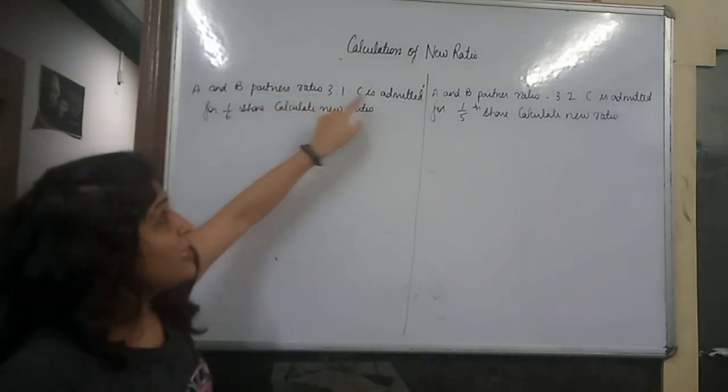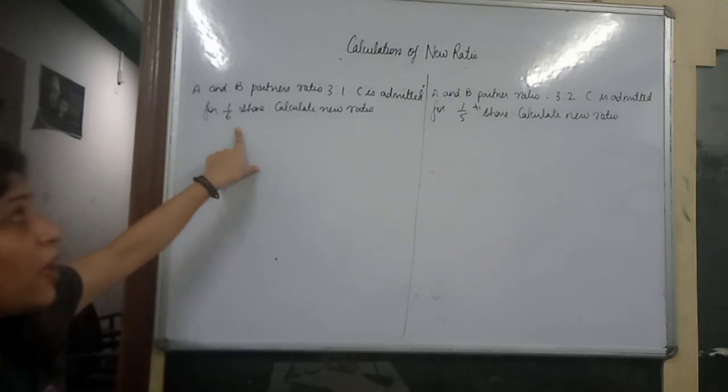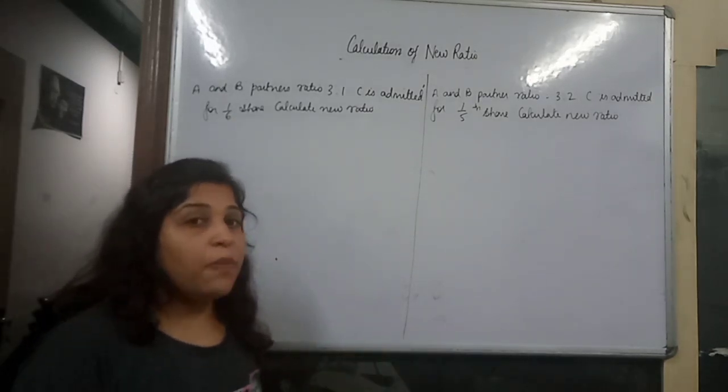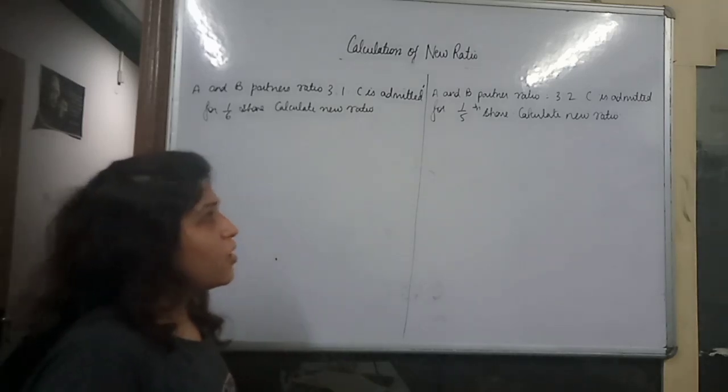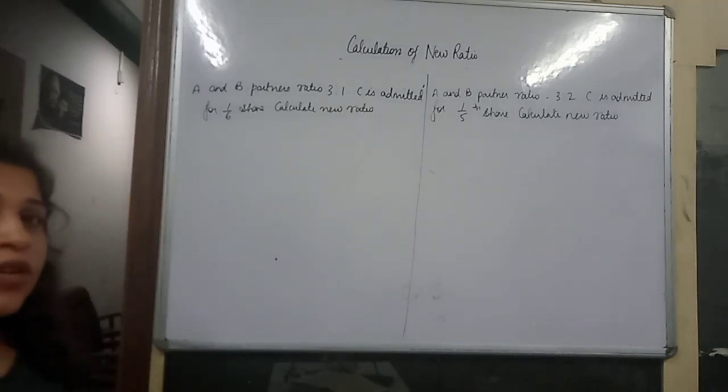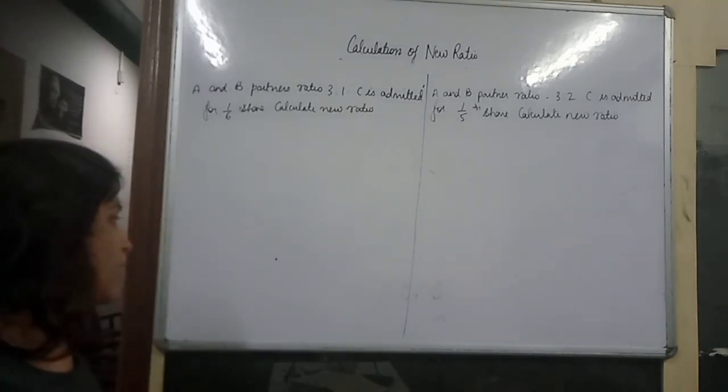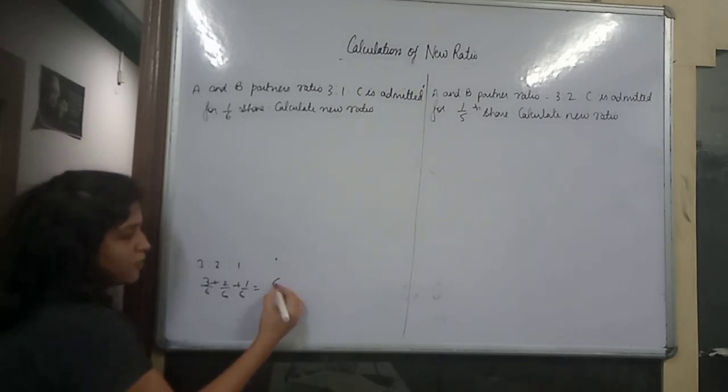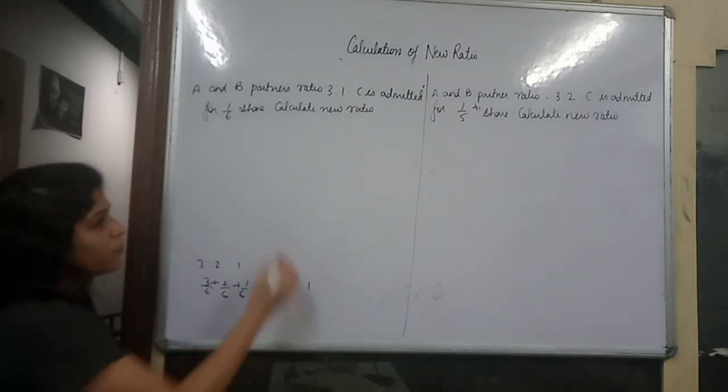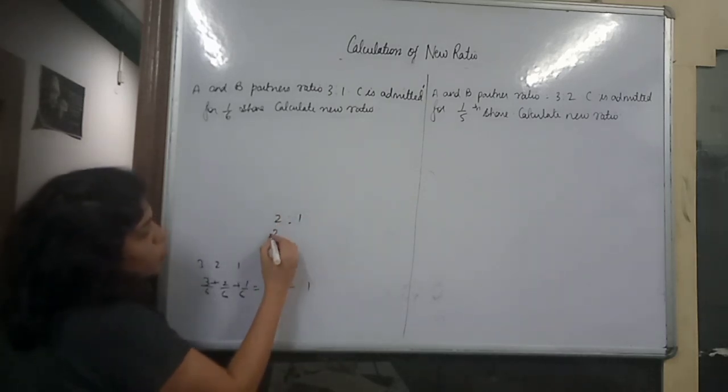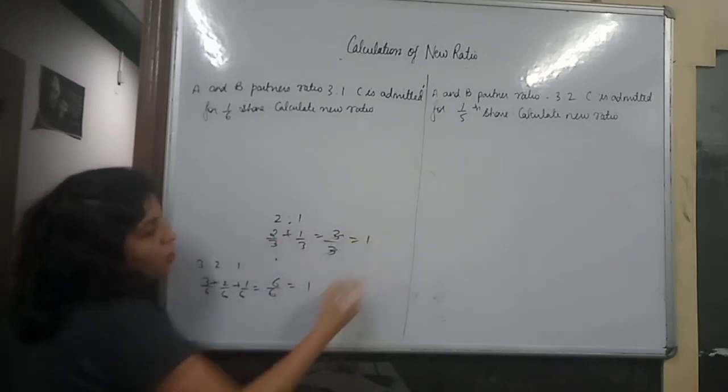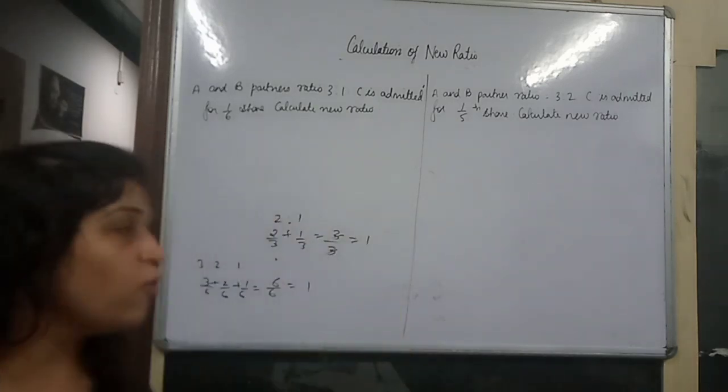In guarantee, there will be a new ratio. Now, the new ratio will come out. If you take any ratio, the total of the ratio is always 1. If you take 3 is to 2 is to 1, 3 by 6 plus 2 by 6 plus 1 by 6 equals 6 by 6 which is 1. Similarly, 2 is to 1 becomes 2 by 3 plus 1 by 3 equals 1. If you take any ratio, the sum of the ratio is always equal to 1.